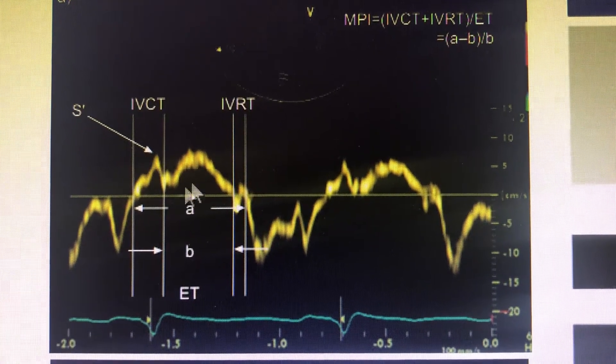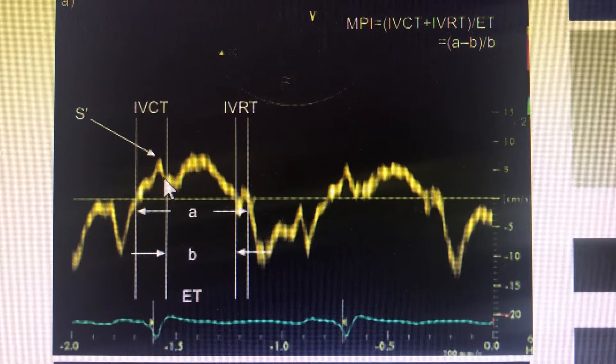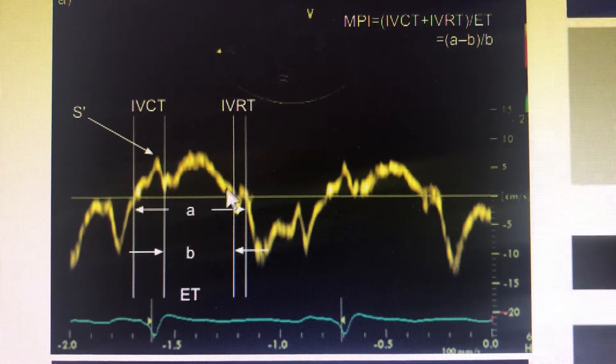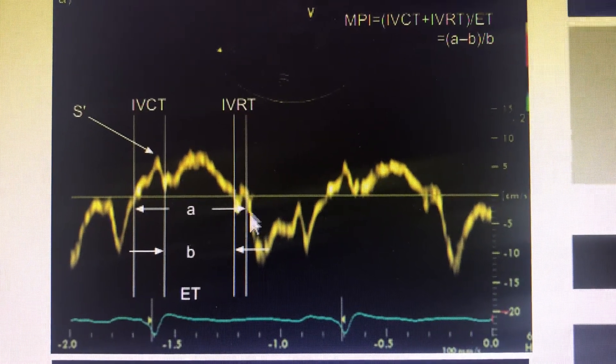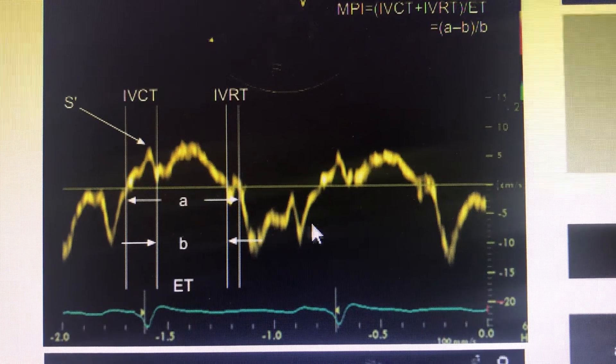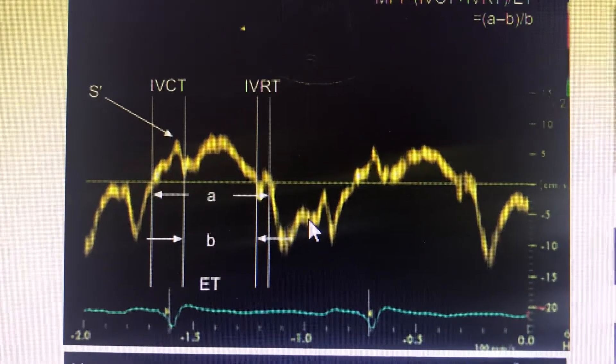Here is the isovolumetric contraction time, then the ejection time, and then the E and A waves of the tissue Doppler that we typically see.